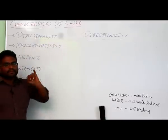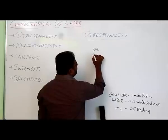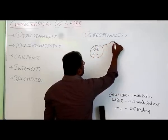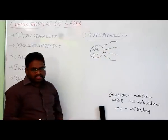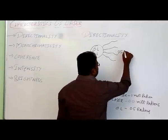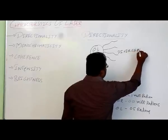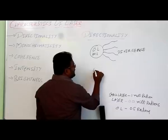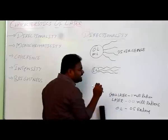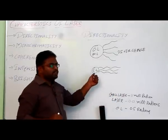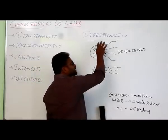The first characteristic is directionality. Ordinary light or monochromatic light both spread light in all directions — this spreading is known as divergence. But laser light spreads in only one direction, so the divergence is very less. This property of moving light in one particular direction is known as directionality.